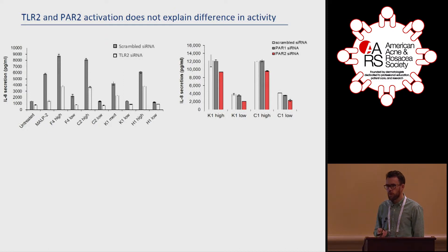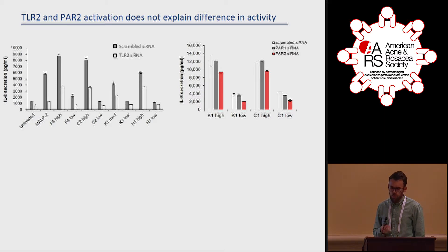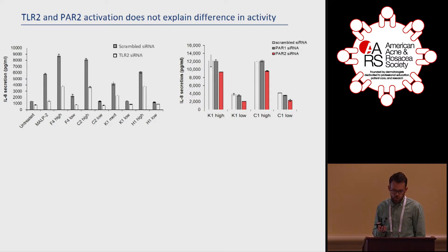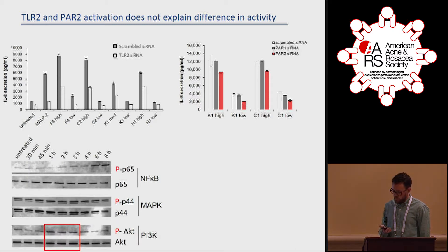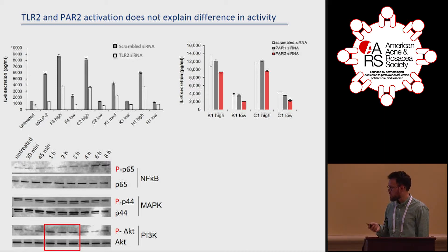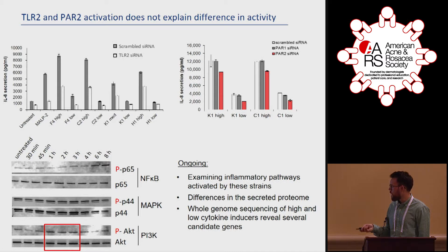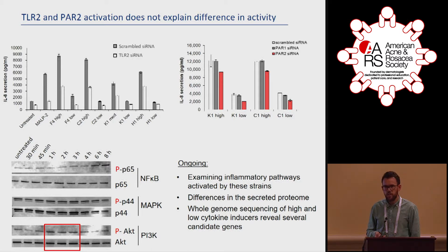We looked at TLR2 and PAR2, the two major receptors shown to be activated by C. acnes. After TLR2 and PAR2 knockdown, inflammation was partially reduced for both high and low cytokine inducers, but this activation probably doesn't fully explain the difference in activity. We're also starting to look at different inflammatory pathways activated by these functionally distinct strains. In high cytokine inducers, we find the NF-κB pathway is activated at later time points, with no difference in MAPK activation, but activation of the PI3 kinase pathway at earlier time points.